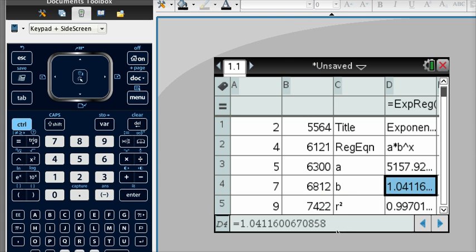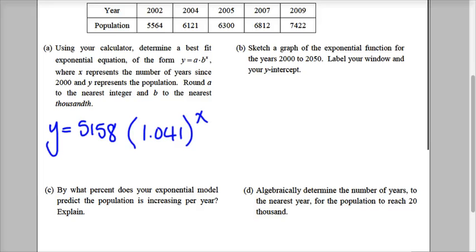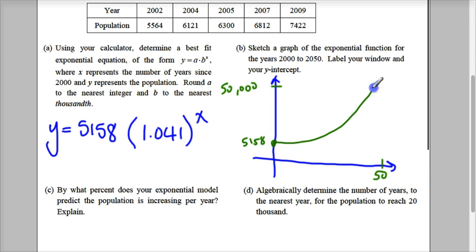Now that you have this, the question says, take that and go ahead and graph it. So I'm going to do a quick sketch. I want you to make sure you understand how to graph this. Let's do some criteria here. Let's make this 50,000. And let's make this 50 years. And then you will see a graph that actually looks something. At this point, it's starting at 5158. And it goes up, and it stops right here.